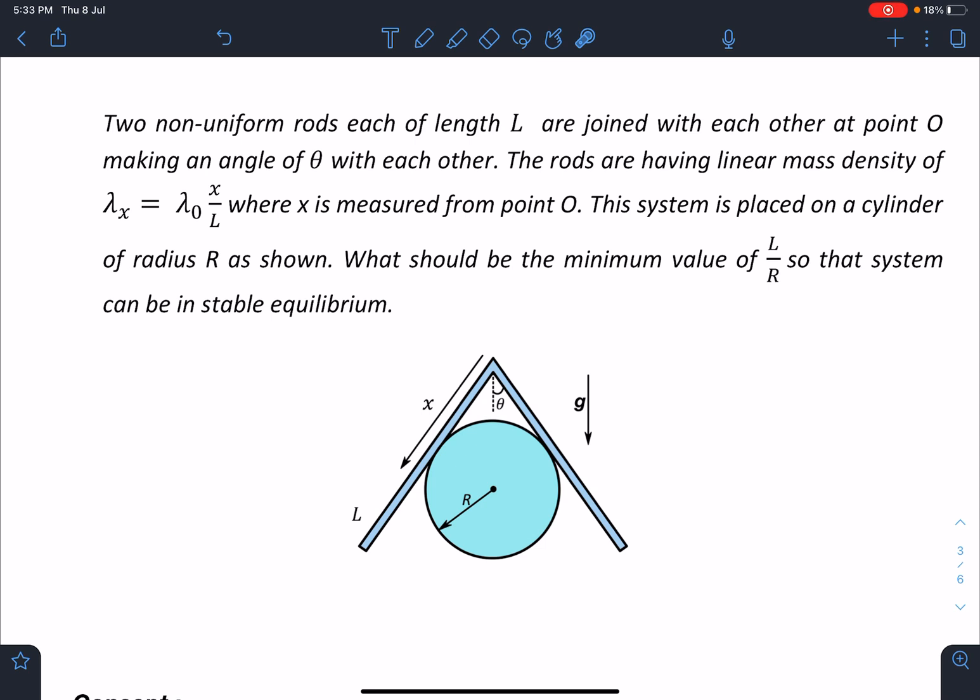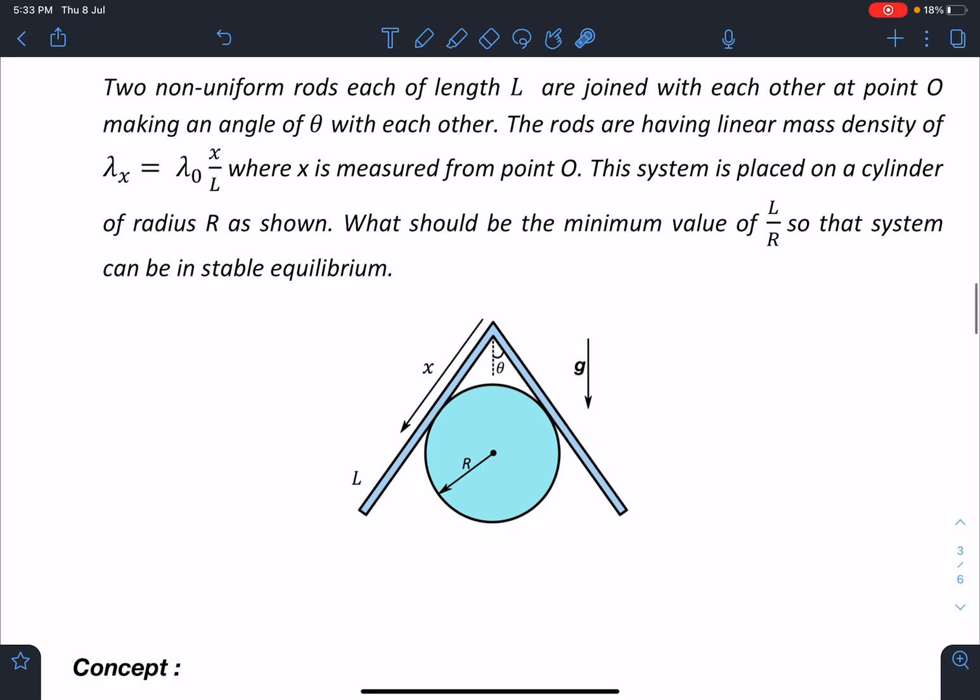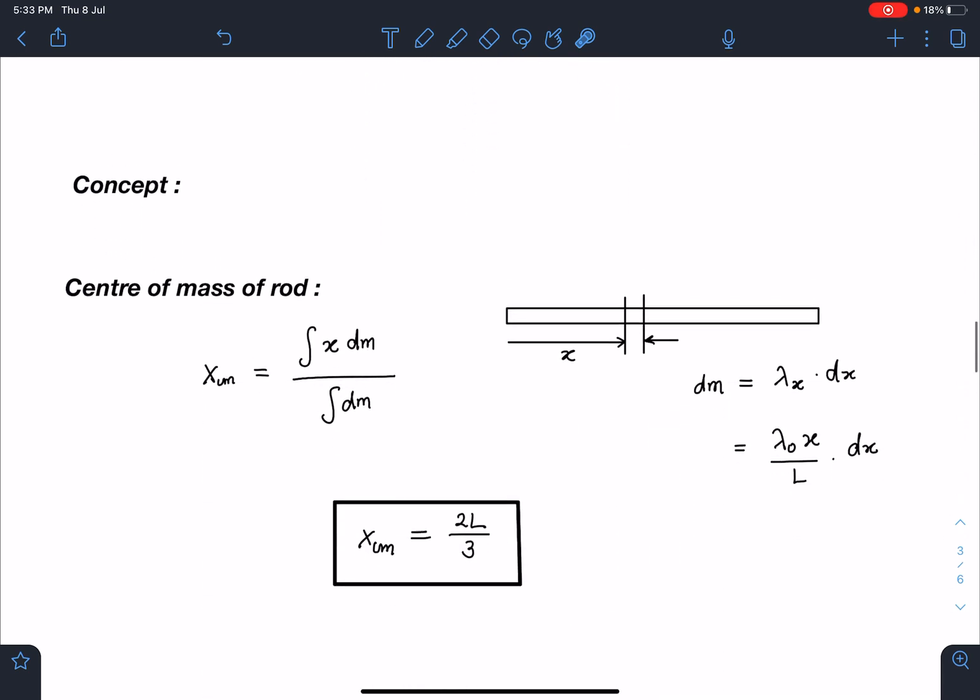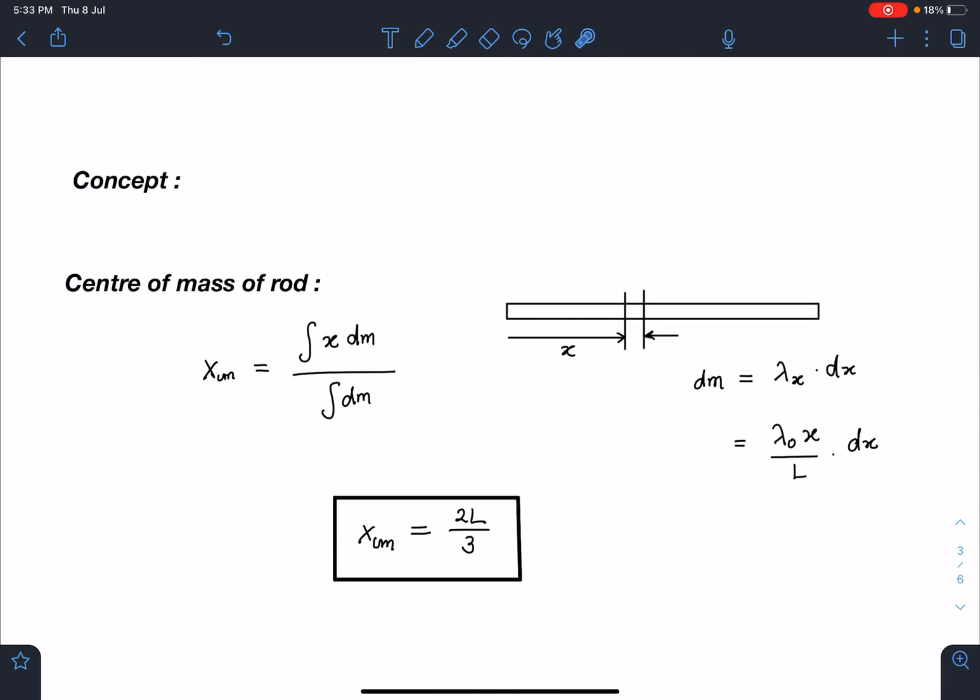By the first look, this problem looks very tough. Let me know after trying this problem how many of you could get the correct answer and the approach wise also. Concept wise, center of mass of this non-uniform rod is very simple. I'm not going to do the calculations. So x_cm is integral x dm and dm is lambda x dx. When you substitute, you will be getting x_cm as 2L by 3 from the end O.